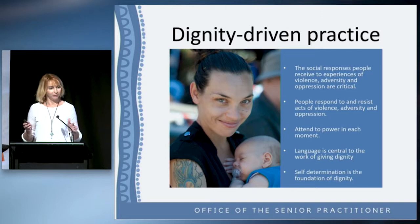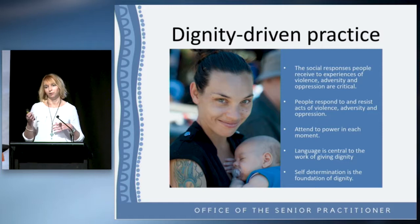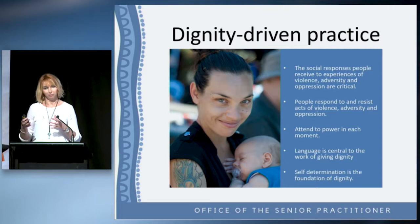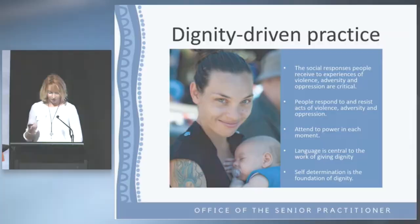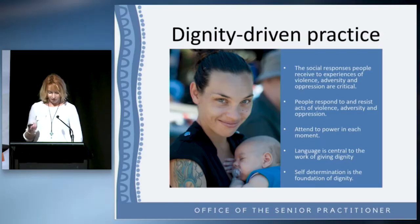It also gives us a different perspective — being really curious about the presenting risks and the possibility that some of the things we're worried about might actually have once been an act of resistance. Things like a parent who uses drugs or alcohol to cope with past childhood abuse, or drinking to cope with a currently violent partner. We're not going to condone the drinking or drug use — we still need to change that for child safety — but we're going to understand the roots of it and help parents understand that we understand where things have come from.